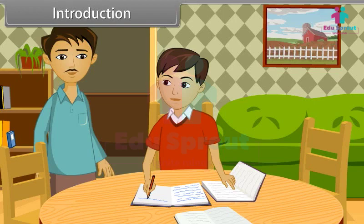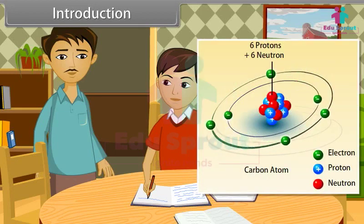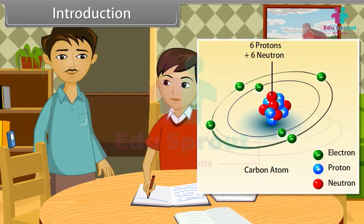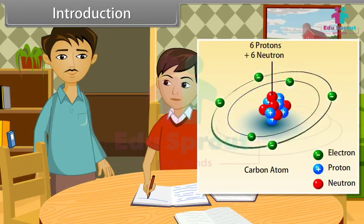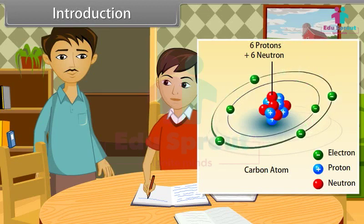Atoms join together to form a molecule. Dad, what kind of materials are there in atoms? Atoms consist of electrons, protons, and neutrons, and a central core which is called the nucleus. It sounds interesting — can you tell me more? Yes, Rohit. In this lesson, you will study the structure of the atom.